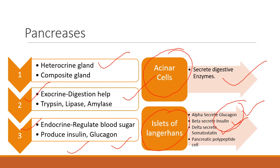Glucagon and insulin work together to maintain blood glucose homeostasis. Delta cells release somatostatin, whose function is to reduce gastric secretion and reduce gastric movement. PP cells and F cells help in the formation and function of pancreatic polypeptide.